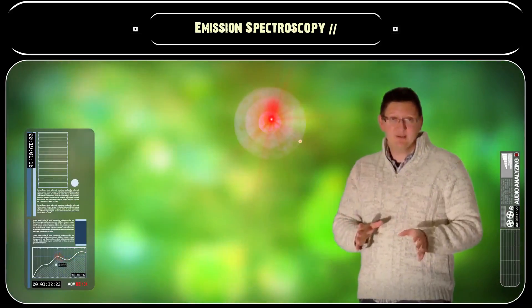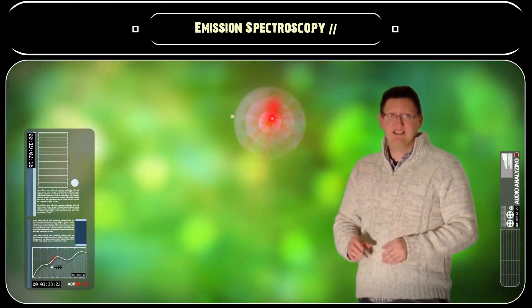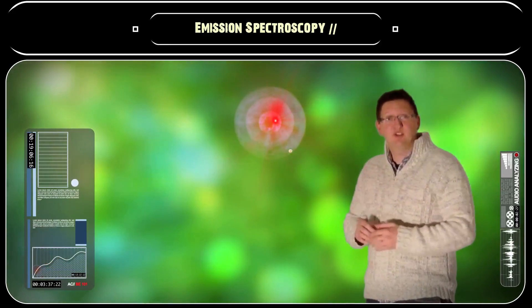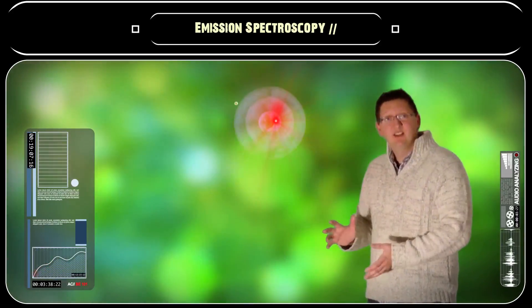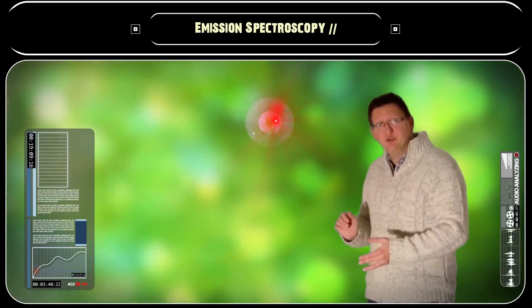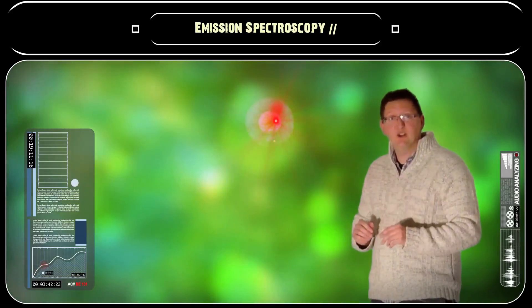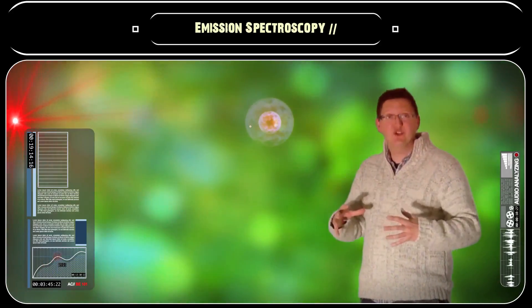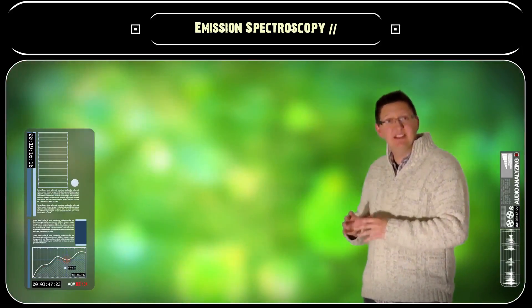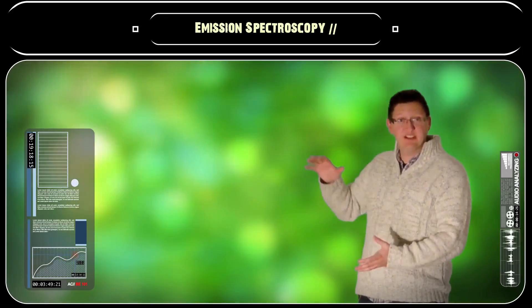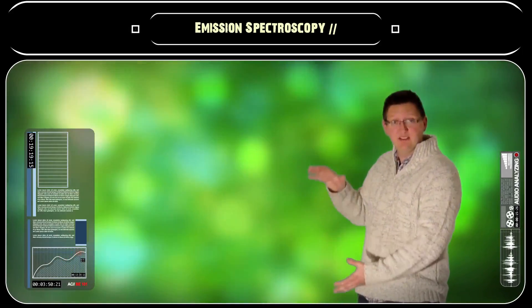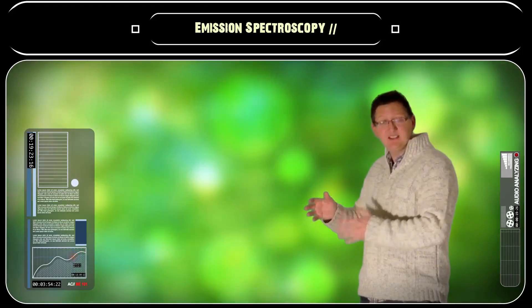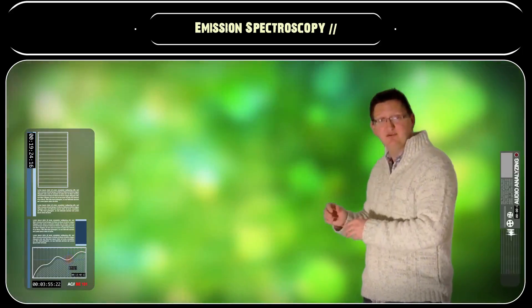Similarly, when an atom is already in its excited state — that is, it has already absorbed some of the energy from a photon of light — then it can go back down to its ground state like this. But in doing so, it will have to emit some of that energy. It does this by emitting the exact same energy as the difference in energy between the electron shells.